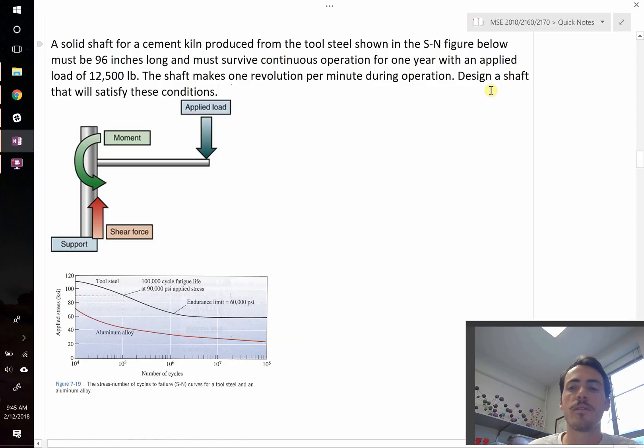Okay, this question says the following. A solid shaft for a cement kiln produced from the tool steel shown in the S-N figure below, it's this one down here, must be 96 inches long and it must survive continuous operation for one year with an applied load of 12,500 pounds. The shaft makes one revolution per minute during operation. Design a shaft that will satisfy these conditions.